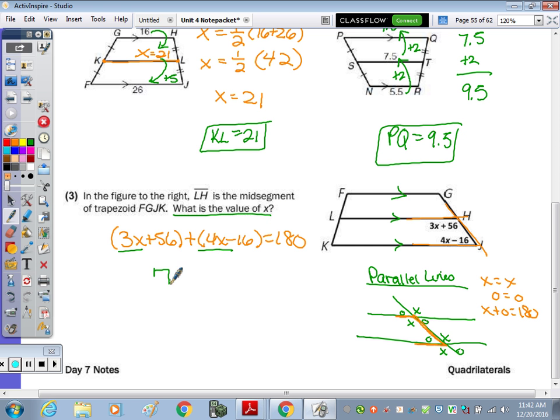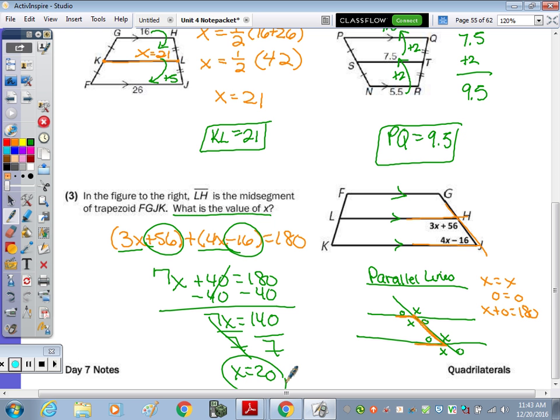But we will take the time to actually solve. 3X and 4X is 7X, and what is 56 minus 16? 40. Subtract the 40, divide by 7. 180 minus 40 is 140. What is 140 divided by 7? 20. 20 is correct. Nice job.